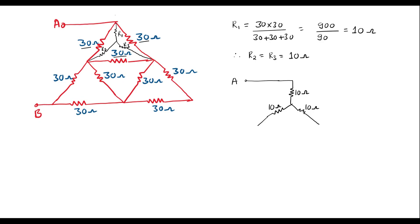The remaining resistors include this 30-ohm resistor, which I will connect as it is. So here we have 30 ohm, and this is 30 ohm, and this is 30 ohm. Now this 30 and this 30 are in series, so I can take the equivalent value as 60.